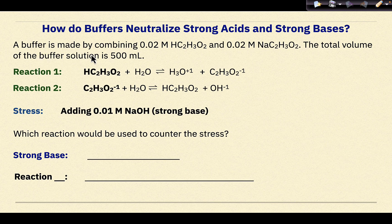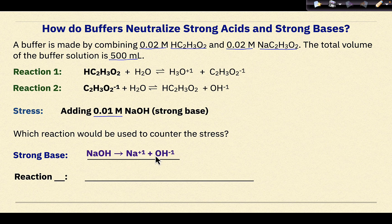Let's look at another example. A buffer is made by combining 0.02 molar HC2H3O2 and 0.02 molar NaC2H3O2. The total volume is 500 milliliters. We again have reaction one and reaction two, but the stress in this situation is adding 0.01 molar of NaOH, a strong base. NaOH dissociates into sodium ions and hydroxide ions, so we need a reaction to neutralize the hydroxide ions. In this case, we use reaction one, where hydronium ions produced from the weak acid neutralize the hydroxide ions.